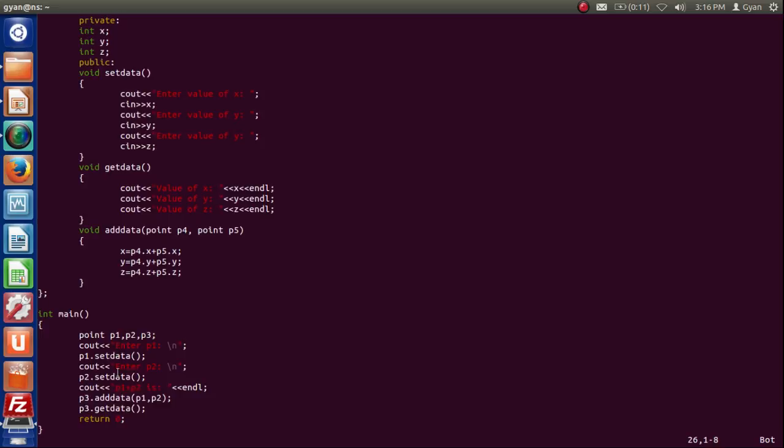So we have hidden x, y, z from main but again showing set data, get data, and add data to main so that main can use these functions.